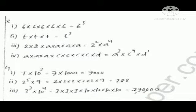In question number 4, part 1: 7 into 10 to the power 3 means 7 multiplied by 1000, so the answer is 7000. In part 2: 2 raised to the power 5 multiplied by 9 — first we multiply 2 five times and then multiply by 9, so the final answer is 288.